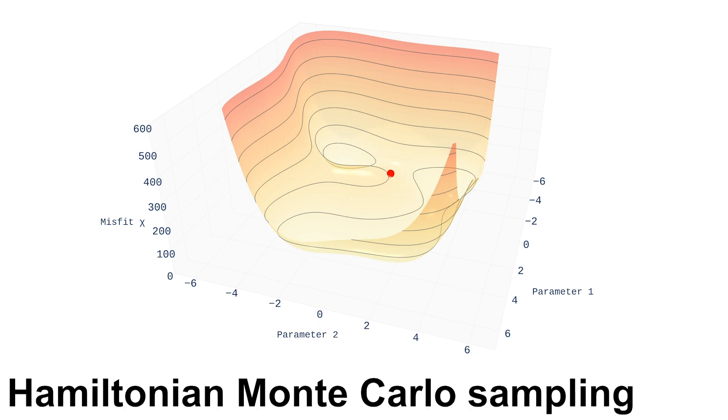Hamiltonian Monte Carlo, or HMC, gets around this by applying both randomization and gradients. It does this by randomly sliding around the misfit surface instead of going to the lowest point. This efficiently gives us many likely models and thereby the associated uncertainties.